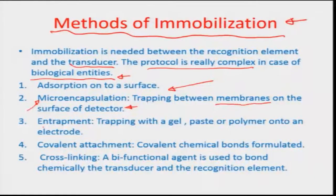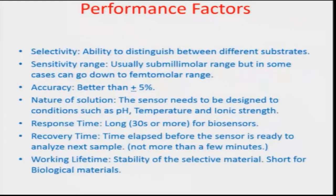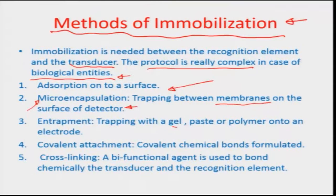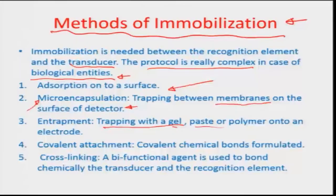Then there is an entrapment process through which immobilization can be carried out. In the entrapment process, you typically use a gel — a semi-fluidic state — which assists the diffusion of the analyte of interest. The gel is a highly porous network with sieves that can also do some filtration as the analyte migrates toward the transducer surface. You can also entrap with paste or polymers onto an electrode.